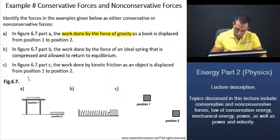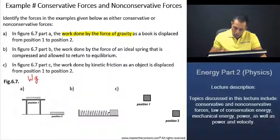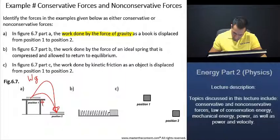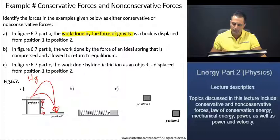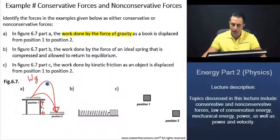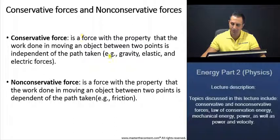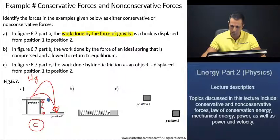The work done by the force of gravity: whatever trajectory this book takes to get to position 2, whether it goes that way or if it goes that way, the work done by the force of gravity is actually dependent upon the vertical displacement. Thus, in both scenarios, the work done by gravity is going to be identical whether it takes this trajectory or that trajectory. Thus, we can say then that in this scenario the force of gravity we found is a conservative force. That is consistent with what we had stated - it is independent of the path taken. And that's what we see here, that the force of gravity is independent of the path taken.